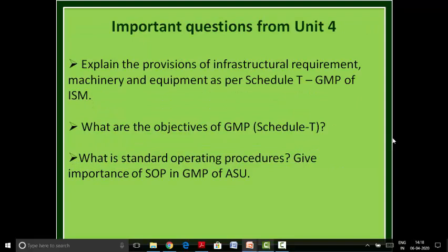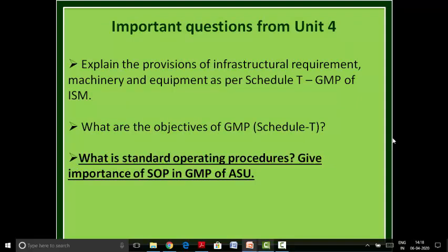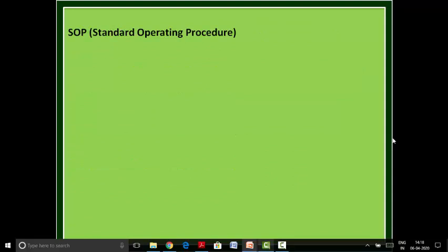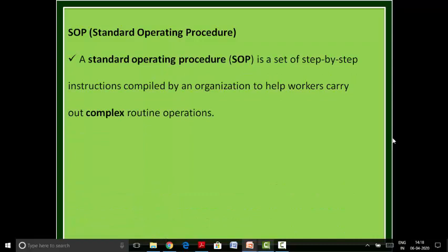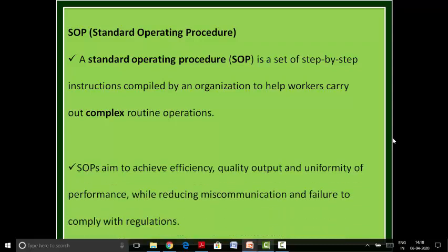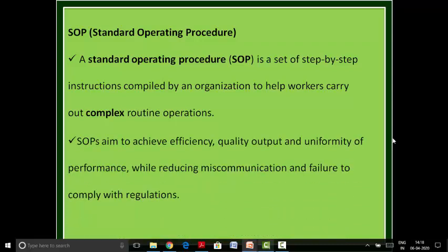We now move to the next question: what is a Standard Operating Procedure, and what is the importance of SOP in GMP of ASU medicines? A Standard Operating Procedure, or SOP, is a set of step-by-step instructions compiled by an organization to help workers carry out complex routine operations. SOPs aim to achieve efficiency, quality, output, and uniformity of performance while reducing miscommunication and failure to comply with regulations.